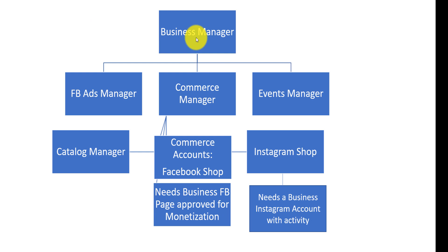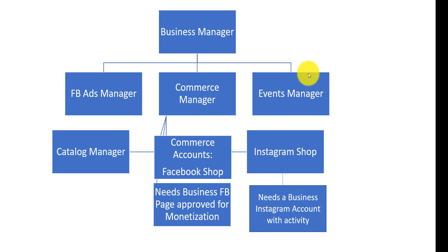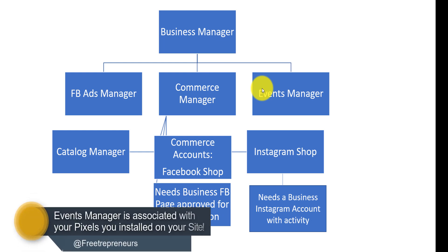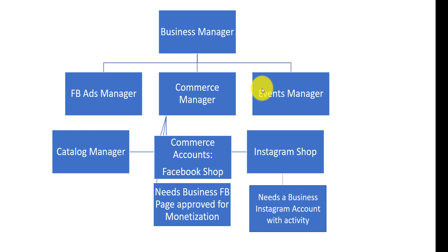In Facebook Business Manager, you have the Facebook Ads Manager where you run ads and create campaigns. It also has a Commerce Manager where you do everything commerce-related — you can sell products on Facebook, Instagram, and possibly WhatsApp. You also have an Event Manager which collects data on everything that happens on Facebook or on your website, tracking who views your pages, who adds to cart, who purchases, allowing you to retarget those people.